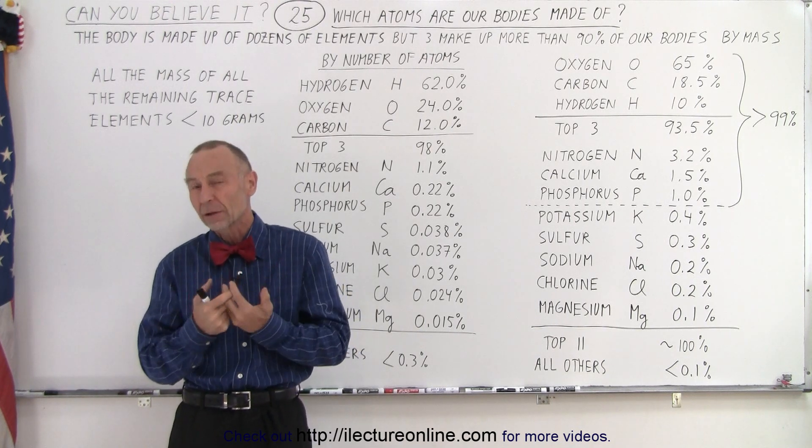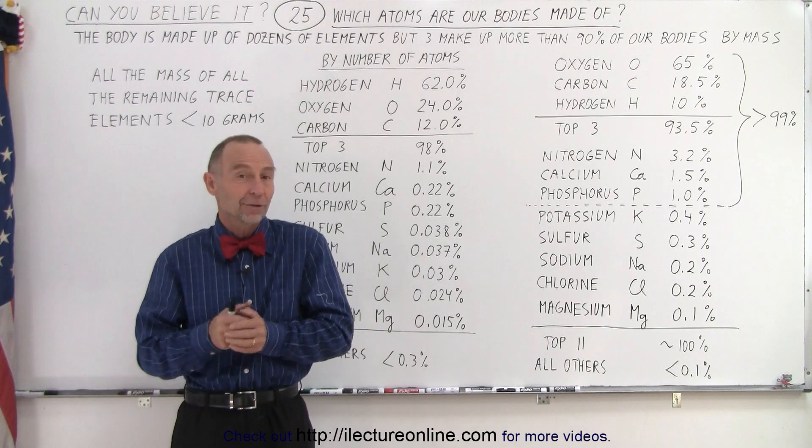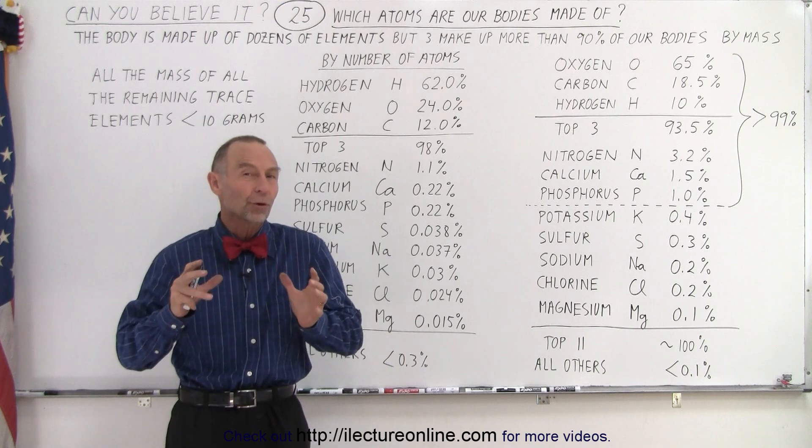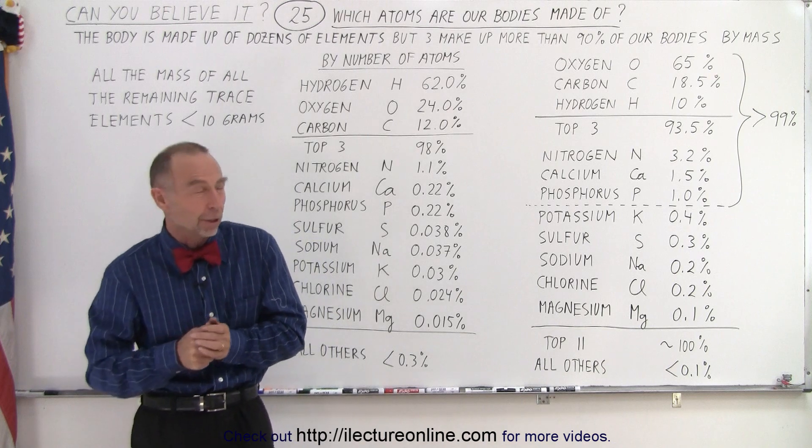But now we want to take a look and see what atoms, what elements of the periodic table is our body made of? And it turns out that the vast majority of our bodies are made up of very few of the elements on the periodic table. So let's take a look.